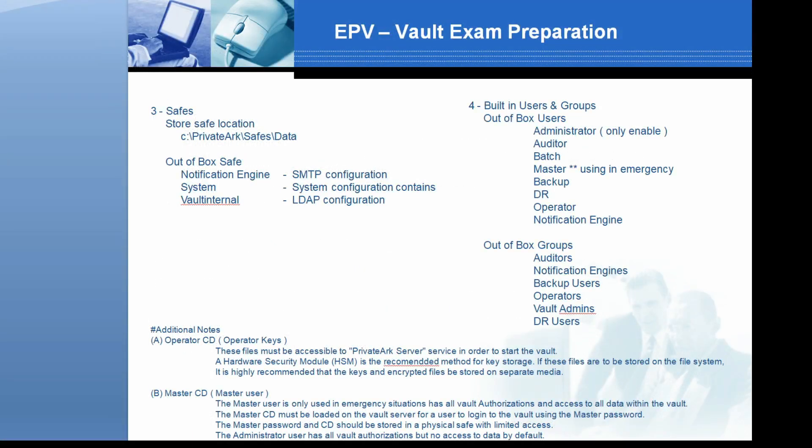Also remember how many safes are involved and how many built-in users and groups there are, such as safe locations and out-of-box safes like Notification Engine, System, and Vault Internal. Built-in users are: Administrator, Auditor, Batch, Master, Backup, DR, Operator, and Notification Engine. Out-of-box groups are: Auditors, Notification Engines, Backup Users, Operators, Vault Admin, and DR User.